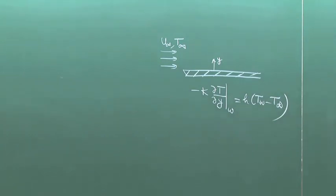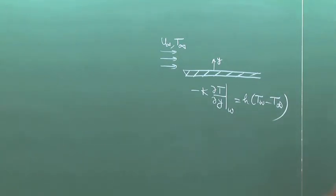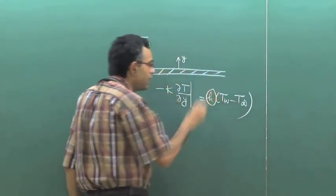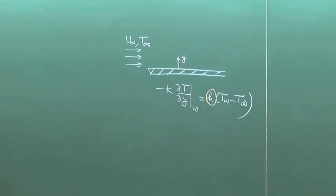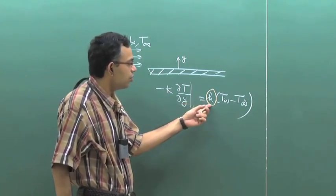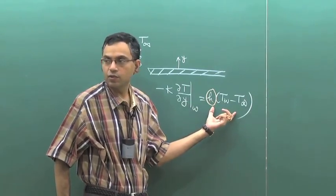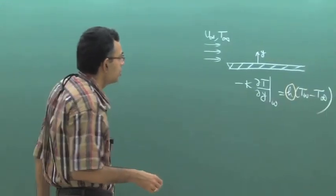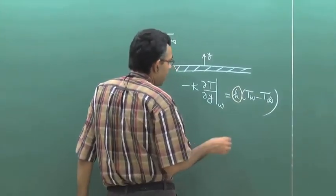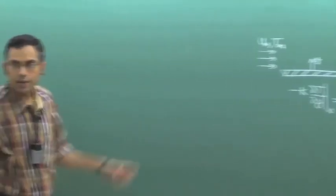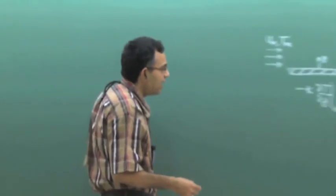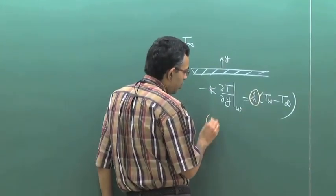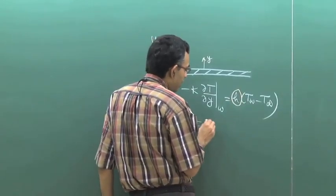In convective heat transfer, we are mainly interested to find out what h is. If we know h, then we know the rate at which heat is being transferred at the wall. The question is: what does h depend on? You can non-dimensionalize this equation — if you define a non-dimensional temperature θ and non-dimensional coordinate y/L, then you can write this equation.